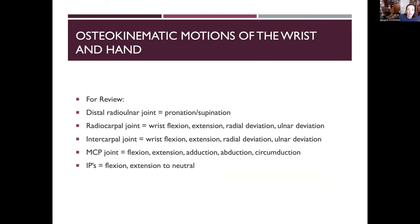Osteokinematic motions of the wrist and hand: the distal radioulnar joint provides pronation and supination. The radiocarpal joint allows wrist flexion, extension, and radial/ulnar deviation — same with the intercarpal joints between the carpal bones. MCP joints allow flexion, extension, abduction, adduction, and circumduction. IP joints allow flexion and extension to neutral — no extension past zero degrees.